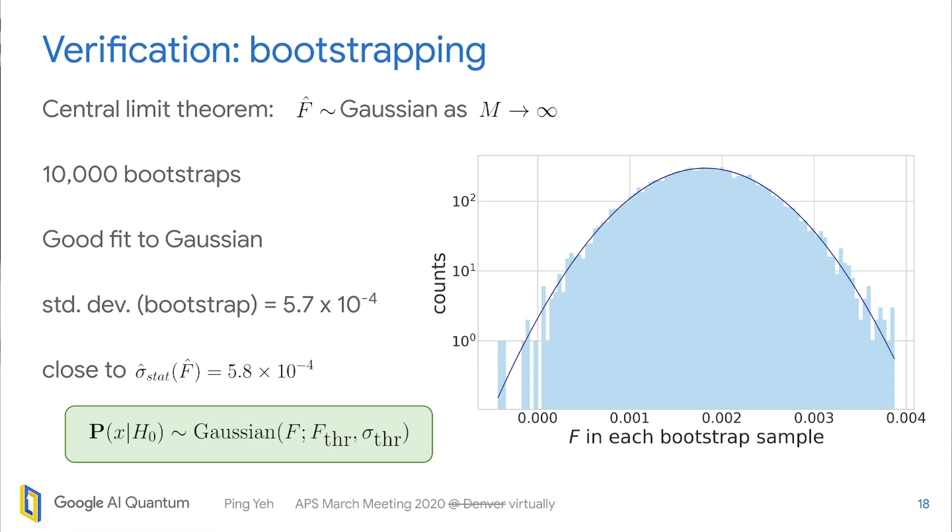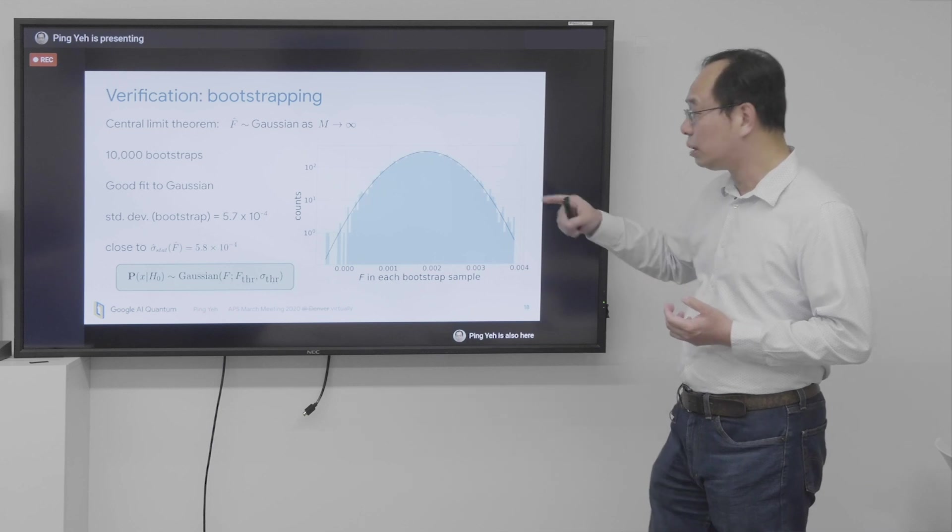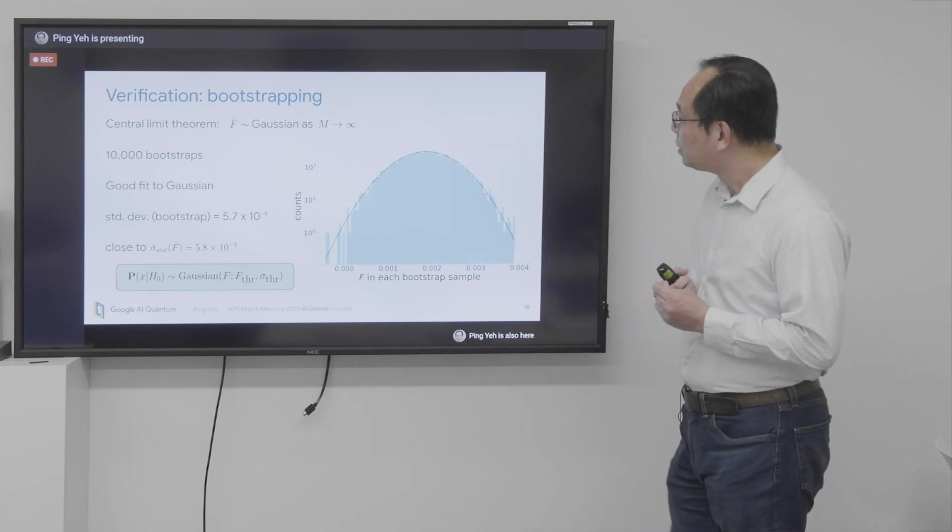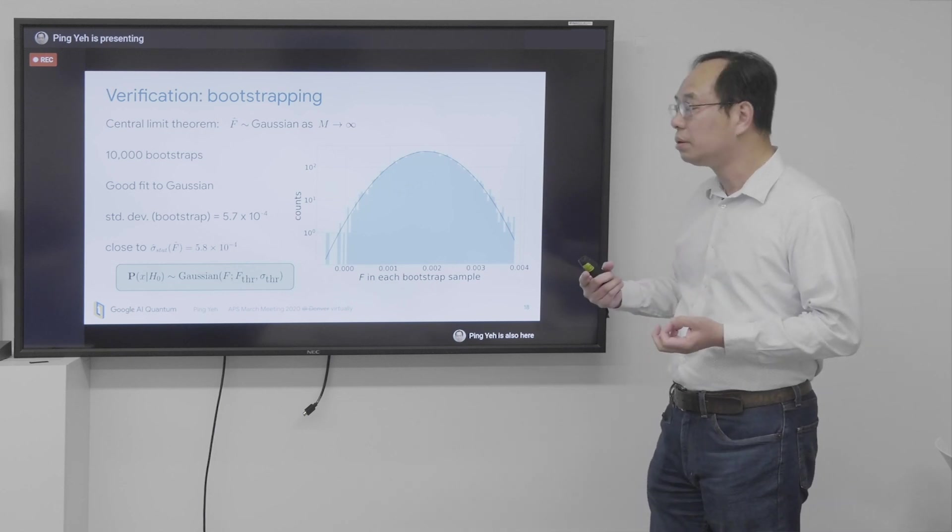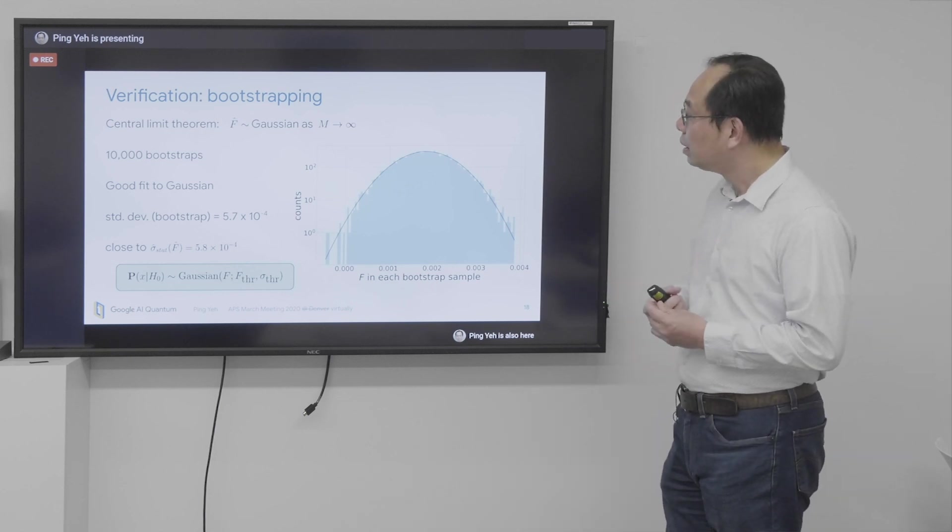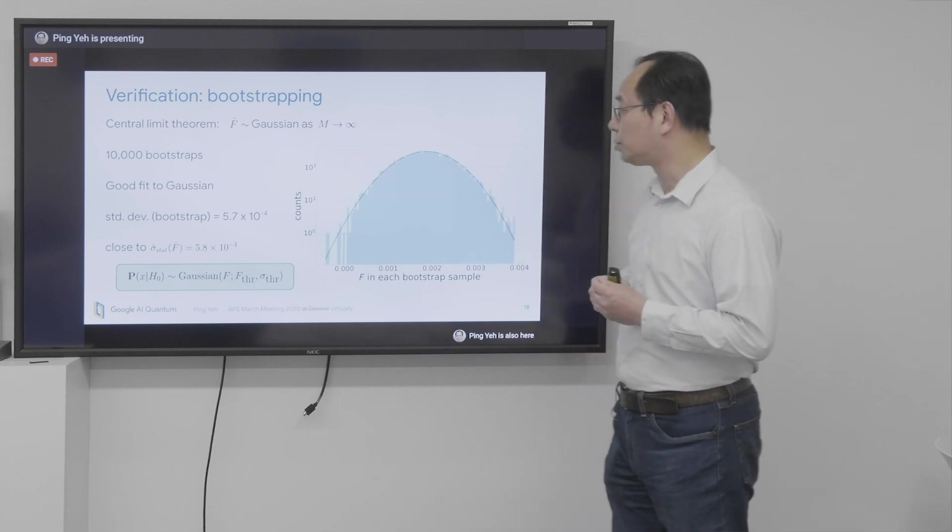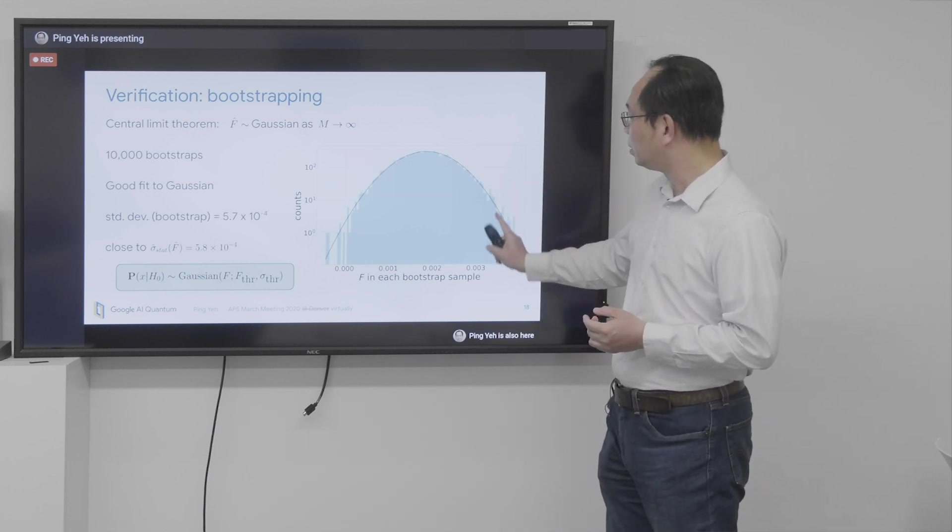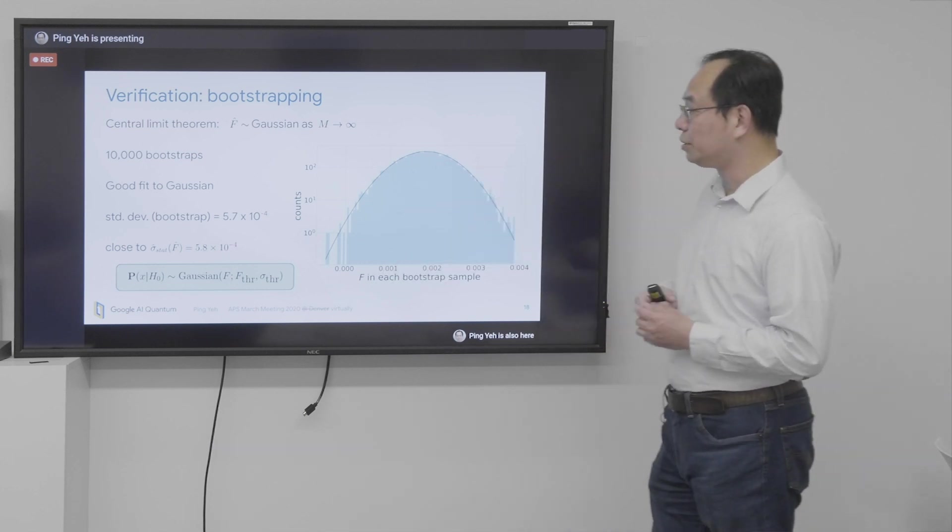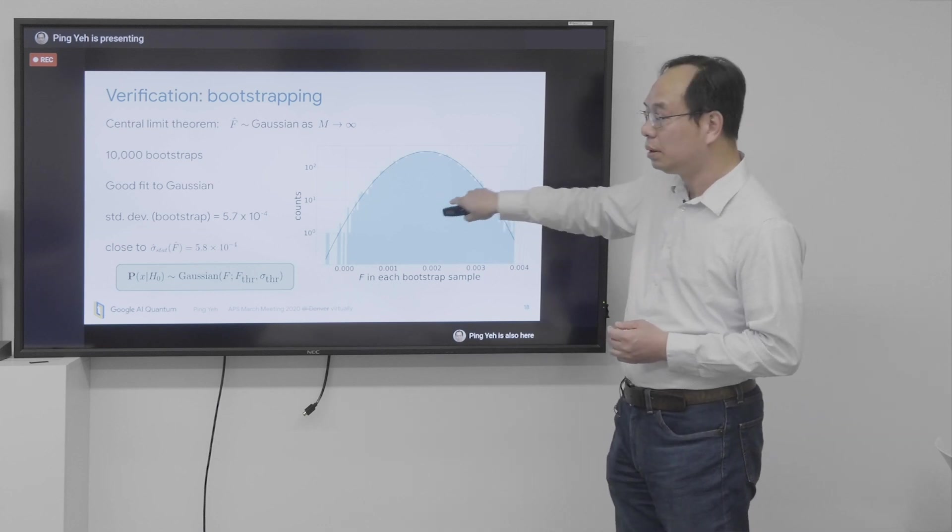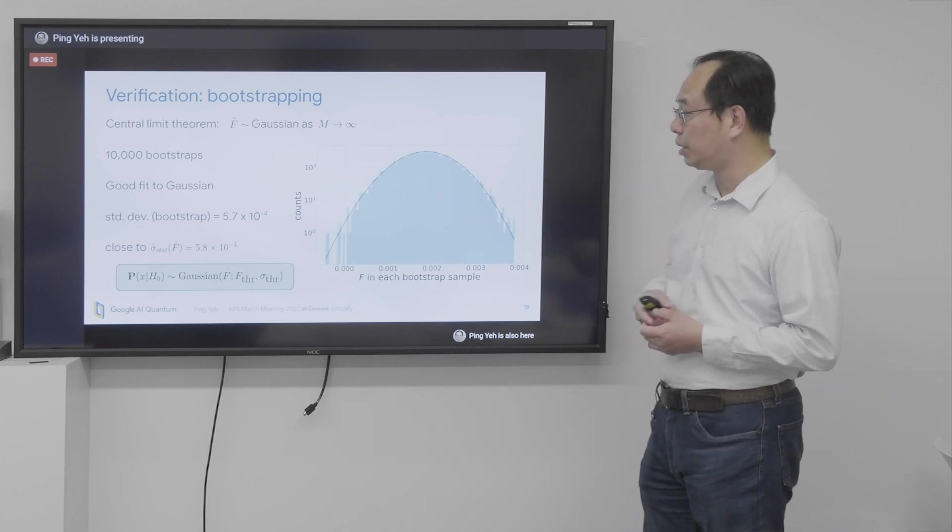And because we have this central limit theorem that the distribution of the mean value should go with the Gaussian when the number of samples goes to infinity. So we perform 10,000 bootstraps. Each bootstrap sample contains 3 million samples. And the mean value or the fidelity from each bootstrap sample is plotted here. And this is the histogram of them. So it indeed looks like a very good fit to Gaussian. And the width of the standard deviation is very close to the estimated one.